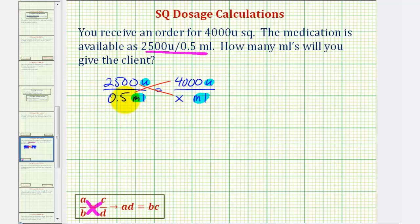Well, 2,500 times X would be 2,500X, and 0.5 times 4,000 would be 2,000. So now to solve for X, which will give us the number of milliliters needed for the order of 4,000 units, we'll divide both sides by 2,500.